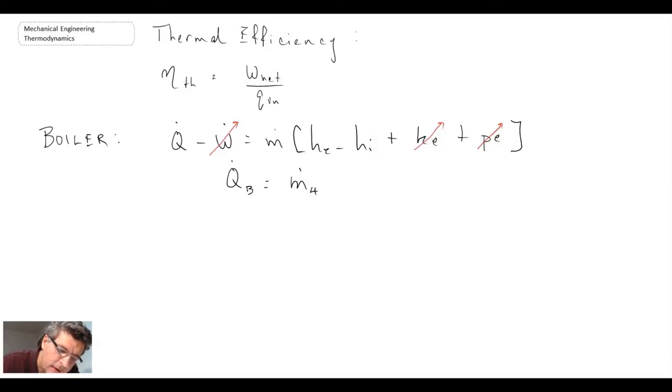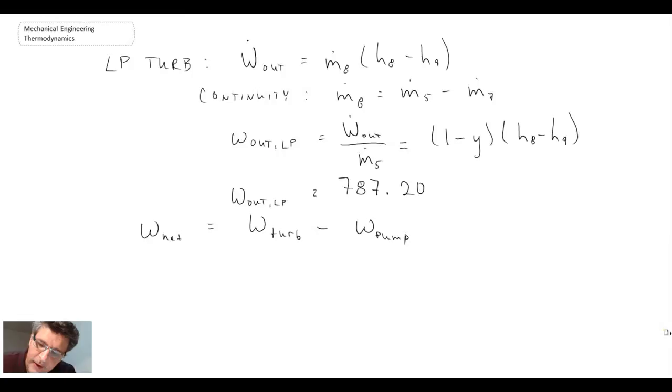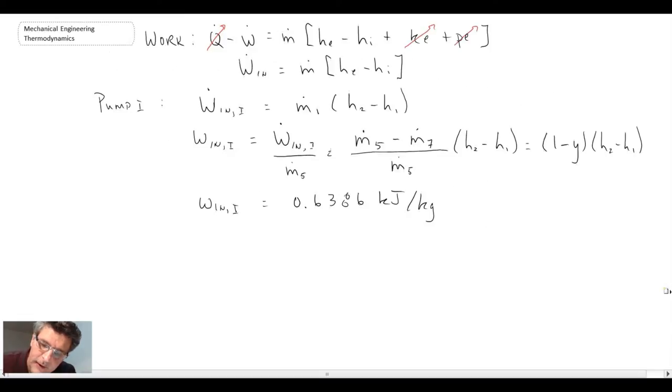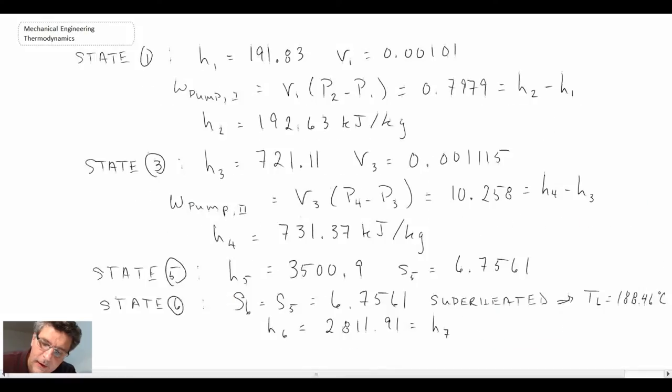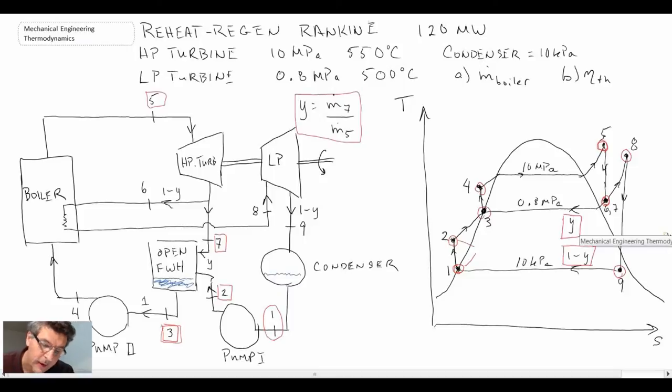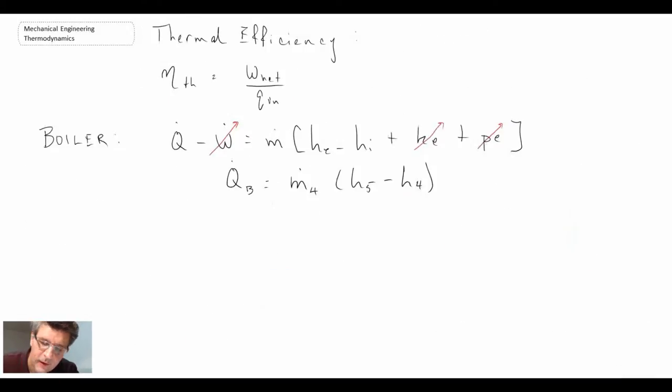Now I'm writing the mass flow rate at 4 coming into the boiler. Let's go back and look at our schematic. Let's see where the heck was it. There we go. Okay. Mass 4 or 5, they're the same thing. Because it's basically mass flowing into the boiler and out of the boiler. It doesn't matter which we use. I put M4 there, but it could have been M5 as well.